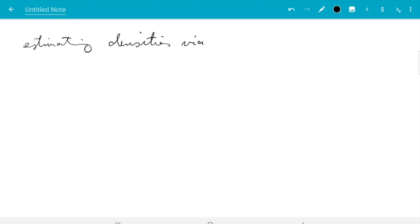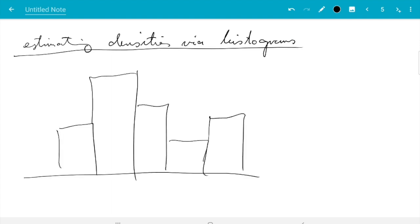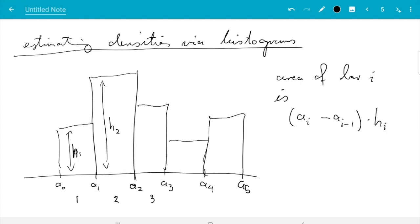So estimating densities via histograms. Let me just sketch some histograms. If we have, say, A₀, A₁, A₂, A₃, A₄, and A₅ as the boundary points, and maybe the heights here are h₁, h₂, and so on. Then the area of bar i is—say that one here is number one, and that's number two, and that's number three, and so on. We see bar one goes from A₀ to A₁, bar two goes from A₁ to A₂. So the width of bar i seems to be from Aᵢ₋₁ to Aᵢ, so it's Aᵢ minus Aᵢ₋₁. That's the width. And the height I just denoted by hᵢ, so that is the height.